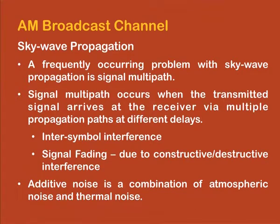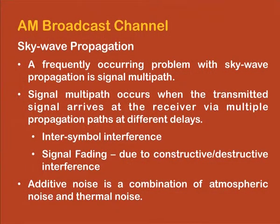A frequently occurring problem with sky wave propagation is signal multipath. This occurs when the transmitted signal arrives from different paths at the receiver, and these different paths, due to their different phases, can combine in phase or out of phase causing constructive or destructive interference. When signals combine in phase, it is constructive interference which is good, but when they combine out of phase there is destructive interference causing a phenomenon called fading. For AM signals we have to deal with this fading phenomenon to overcome the distortions, employing techniques to maintain reception even in deep fade.